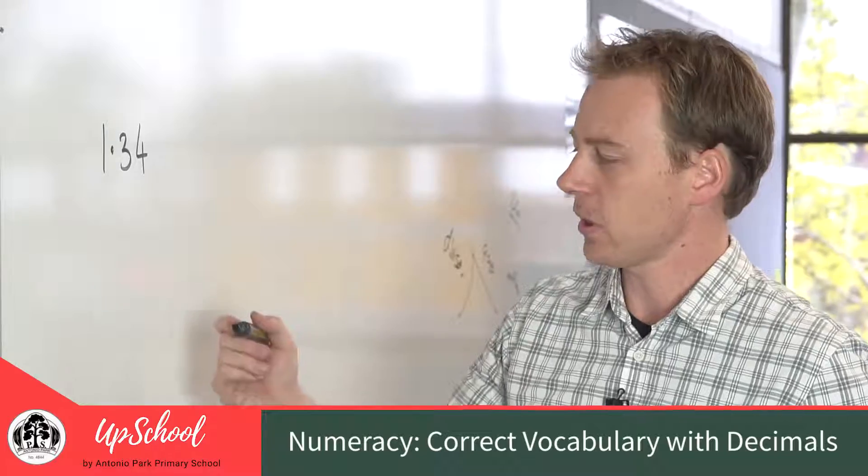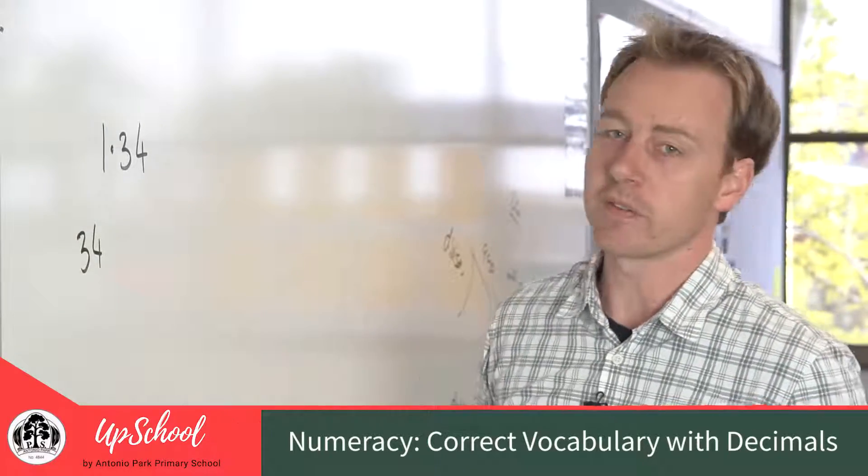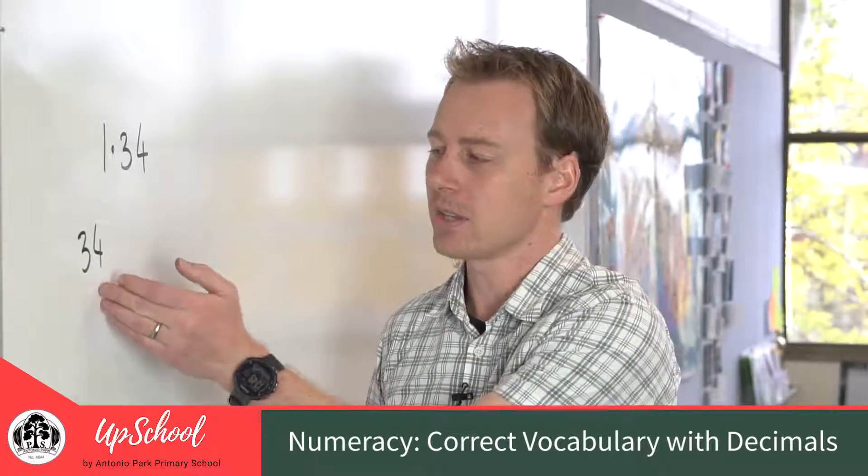In the same way that it works on the other side of the decimal point, we would say 34, we wouldn't say 3 tens and 4 ones.